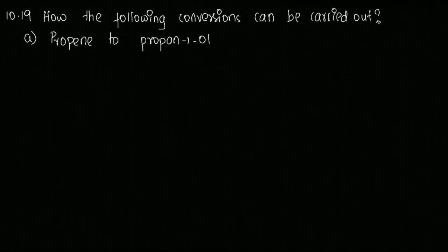Next is question number 10.19. How the following conversions can be carried out? They will give a reactant and a product, and you need to show how the conversions are carried out using suitable reagents. The compound given is propene, so propene is CH3-CH=CH2, and you need to form propanol.